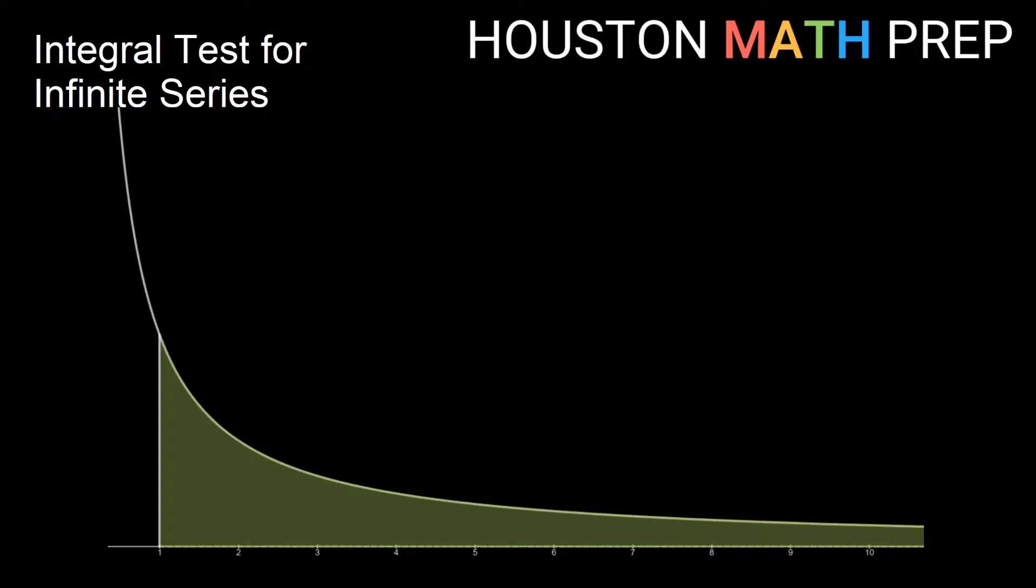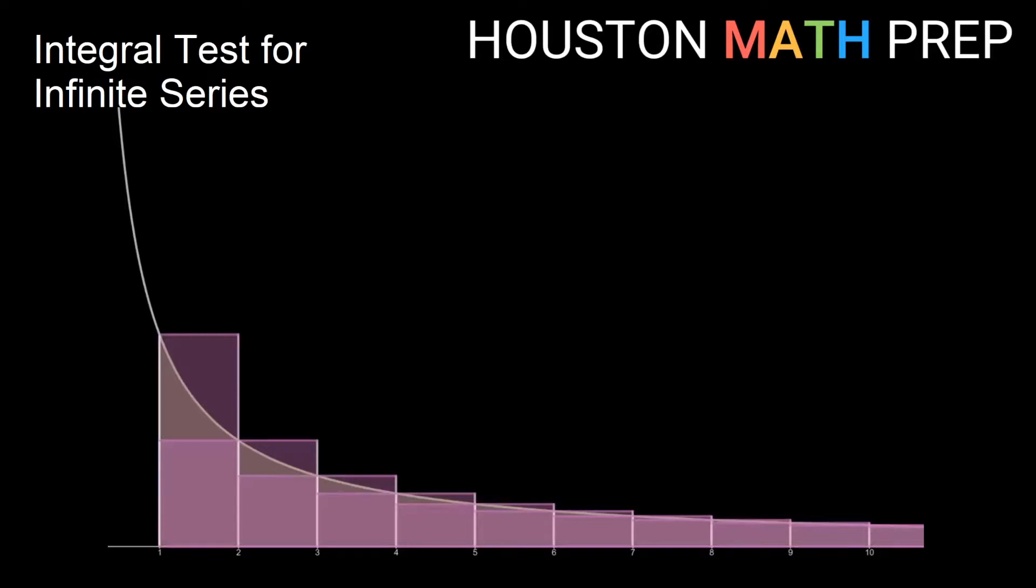Since we know the value of the integral will be somewhere in between these two sums and one term is not enough to change whether a sum converges or diverges, we know our infinite series big picture will do whatever the integral does. So if the integral converges, then the series will converge, and if the integral diverges, then the series will diverge as well.